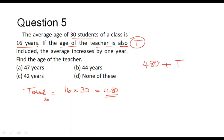480 is the sum of the ages of all the students plus T, to that you are adding the age of the teacher. So total number of people under consideration is equal to 31, so 480 plus T divided by 31 will give you the new average.